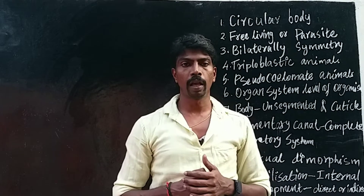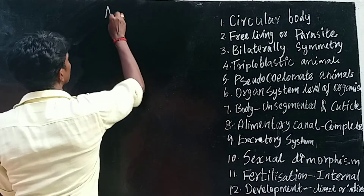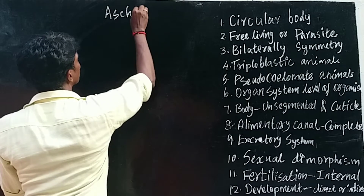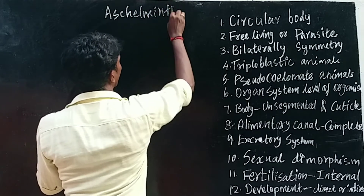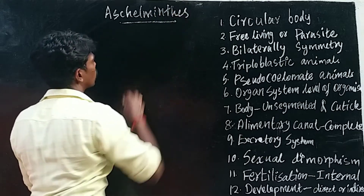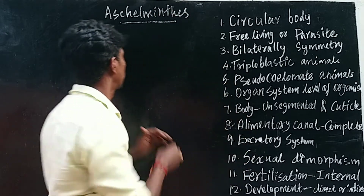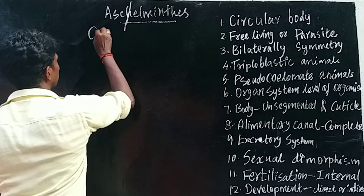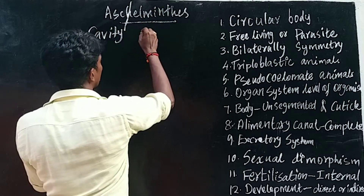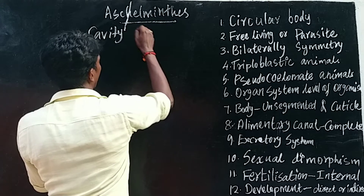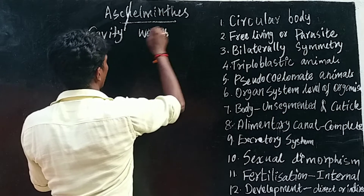Welcome to all. Today we have talked about the Phylum Aschelminthes. The meaning of Aschelminthes is: 'askos' means cavity, and 'helminthus' means worms.